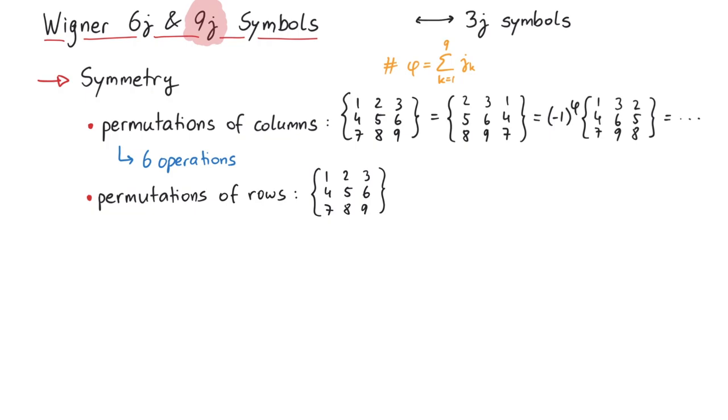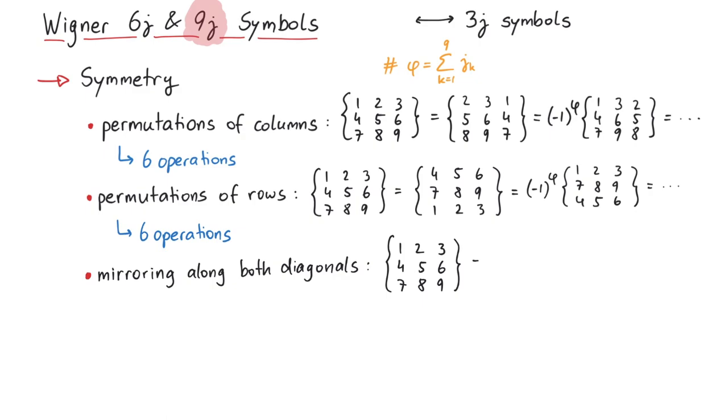Similarly, permutations of rows leave it invariant, with the phase factor again for odd permutations. Another six operations. Next, you can mirror the elements along both diagonals, and the value stays the same.